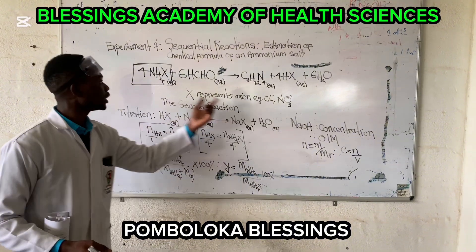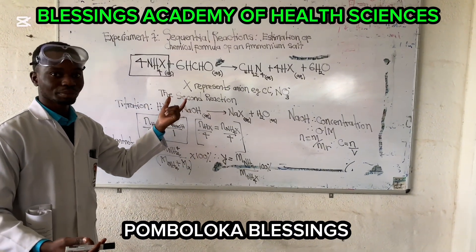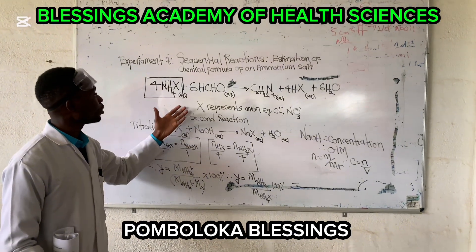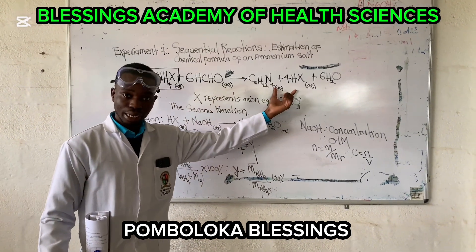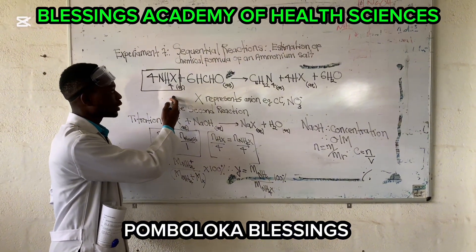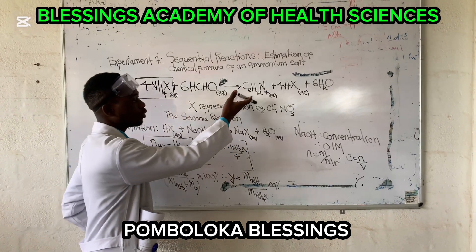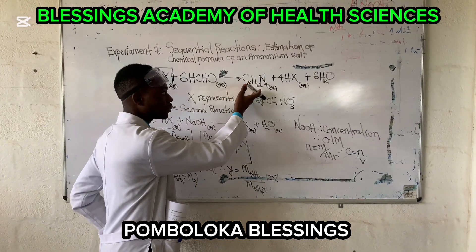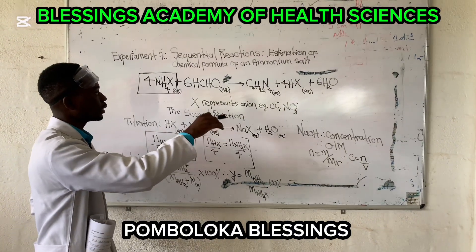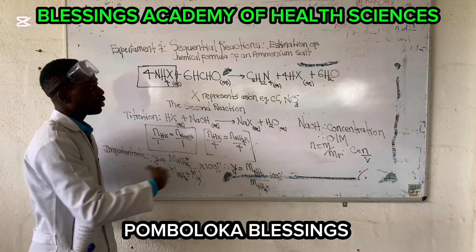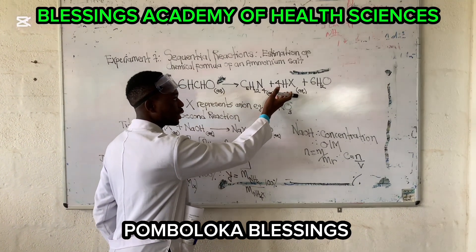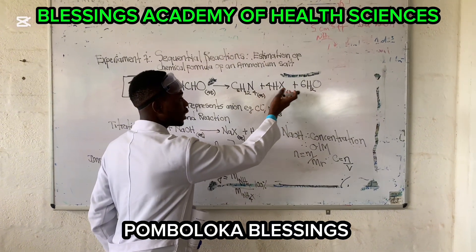If X is Cl, we say this is ammonium chloride. If it is NO3, we say this is ammonium nitrate. In the first part of the reaction, we have the ammonium salt reacting with formaldehyde to give us the first product, the second product, and the third product, which is water. So you can see that from the first part of the reaction, this is a reaction yielding water plus a salt.